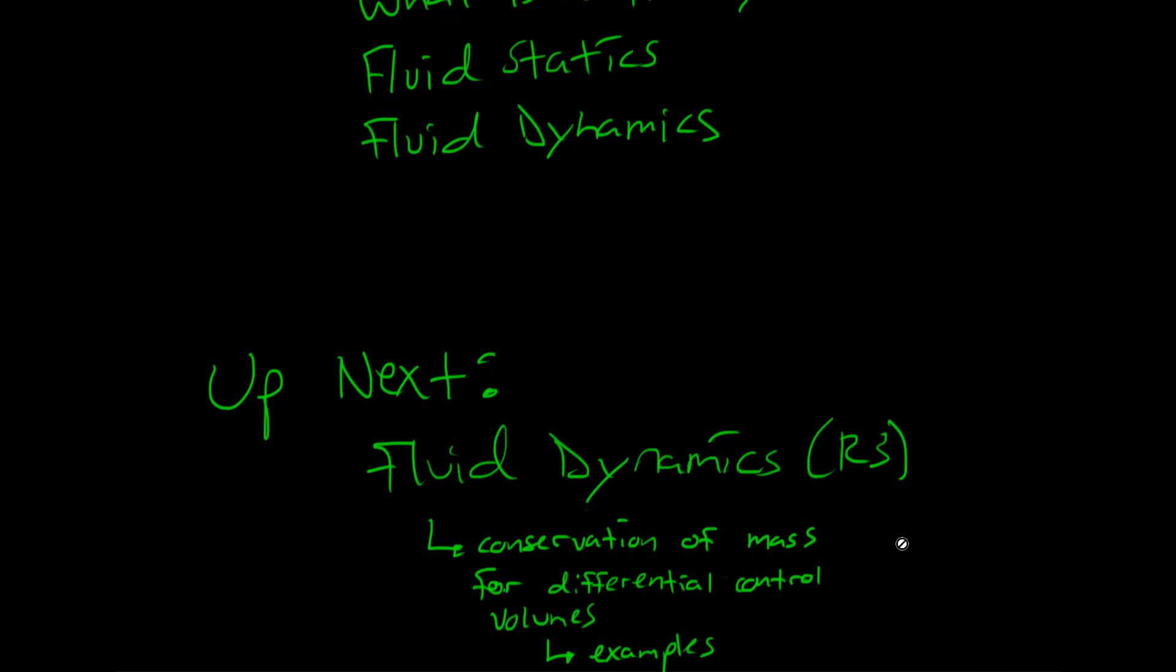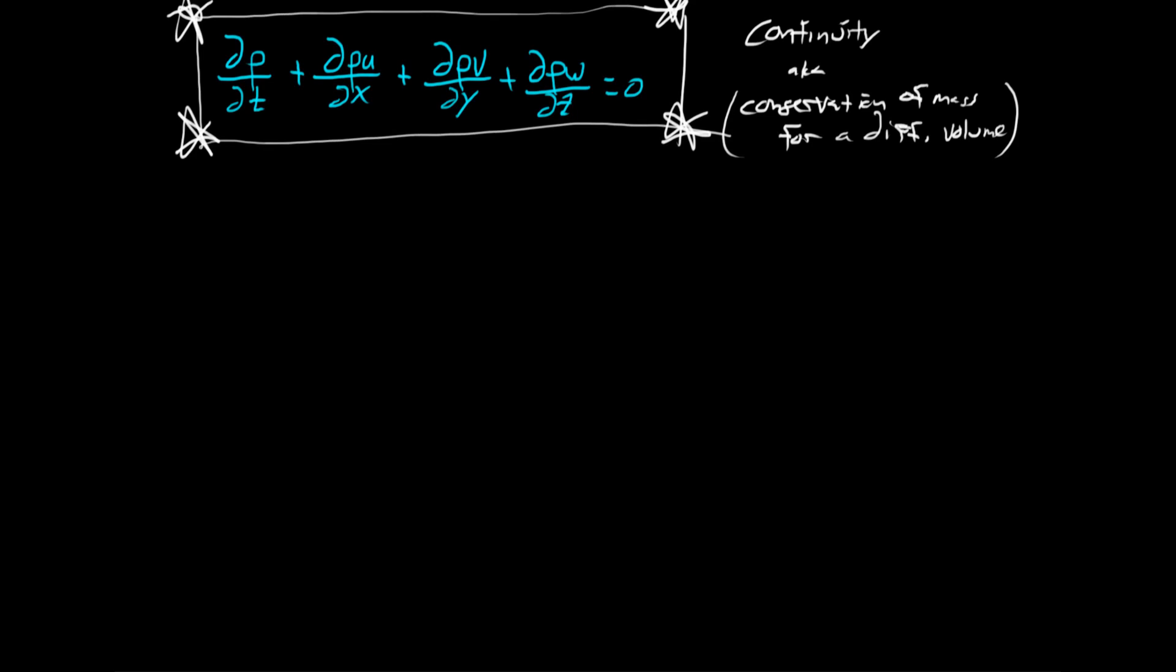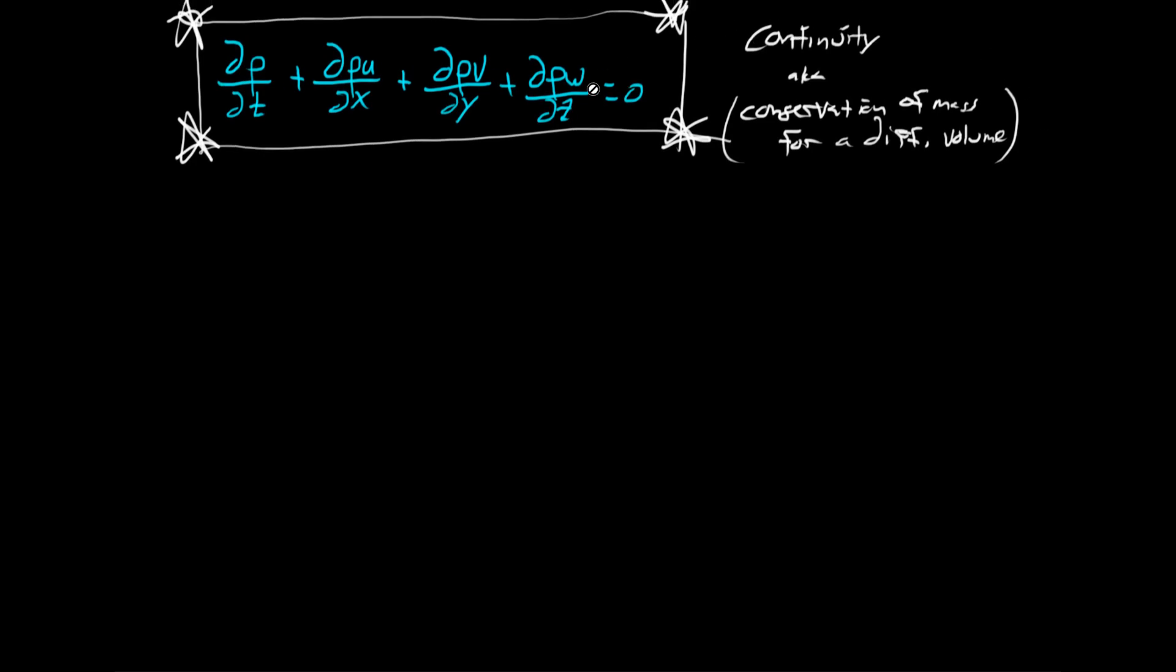In this example, we'll use the conservation of mass to find an unknown velocity. Just a reminder, for a differential fluid element, the conservation of mass or the continuity equation looks like this.